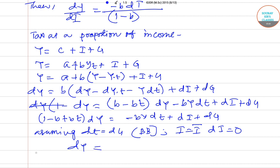Then we get (1 minus B plus BT) dY equals (1 minus B) dG. So clearly this is not equals to 1.